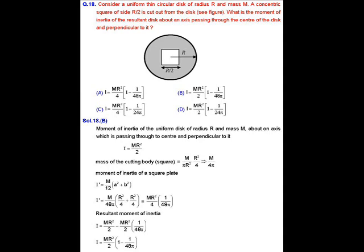The moment of inertia of the uniform disk of radius R and mass M about an axis passing through its center and perpendicular to it is I = MR²/2.